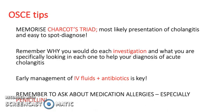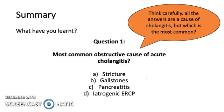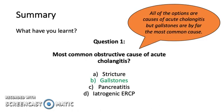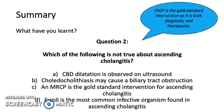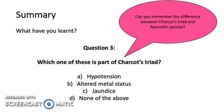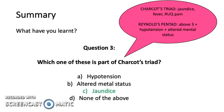Let's review with a few questions. What is the most common obstructive cause of acute cholangitis? Gallstones — all options are causes, but gallstones are by far the most common. Which of the following is not true about ascending cholangitis? An MRCP is the gold standard intervention — this is false, as ERCP is the gold standard. Which one of these is part of Charcot's triad? Jaundice — hypotension and altered mental status belong to Reynolds' Pentad, not Charcot's triad. Thank you very much for listening.